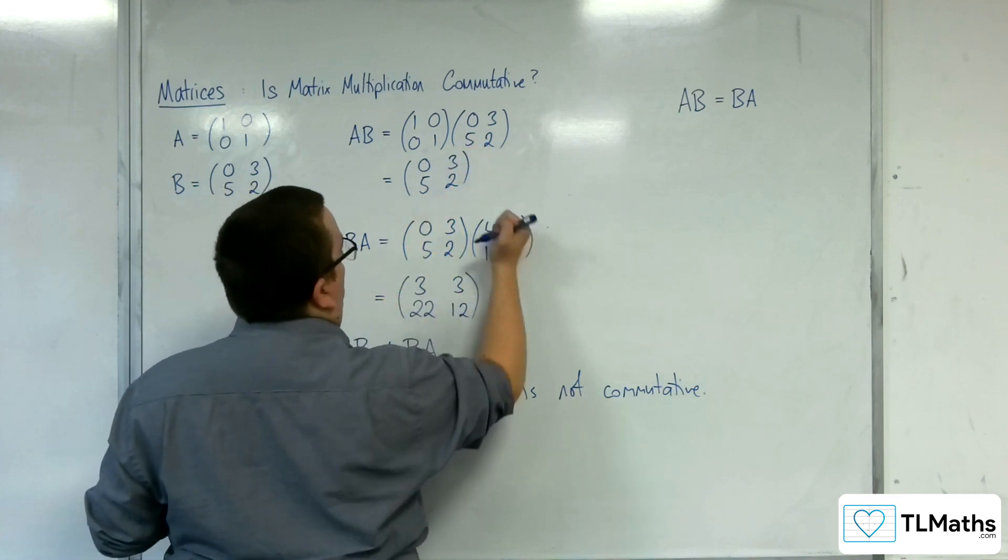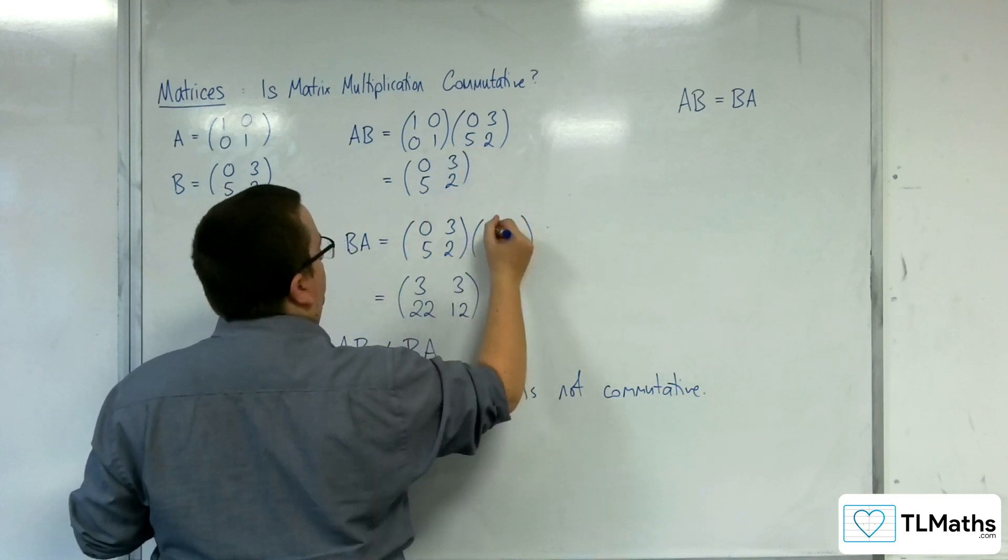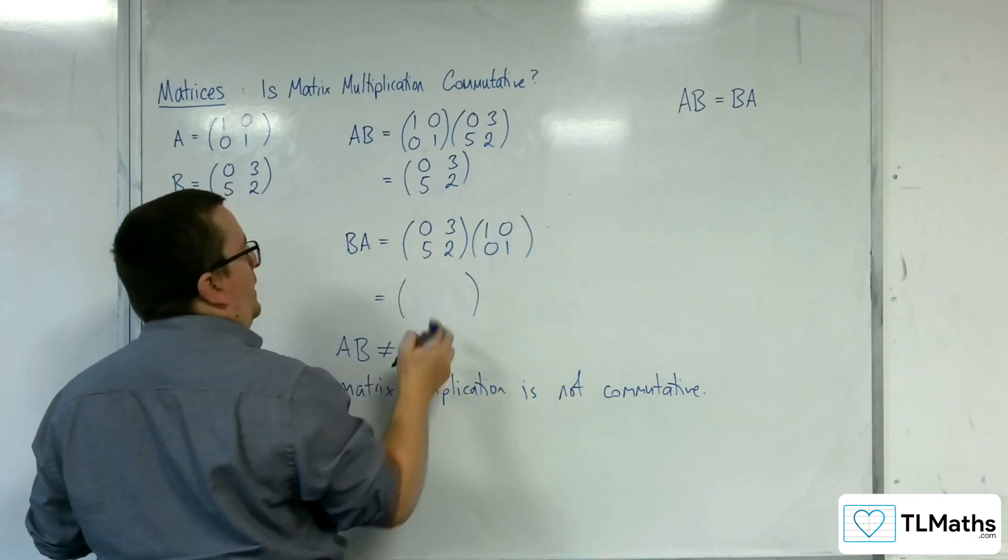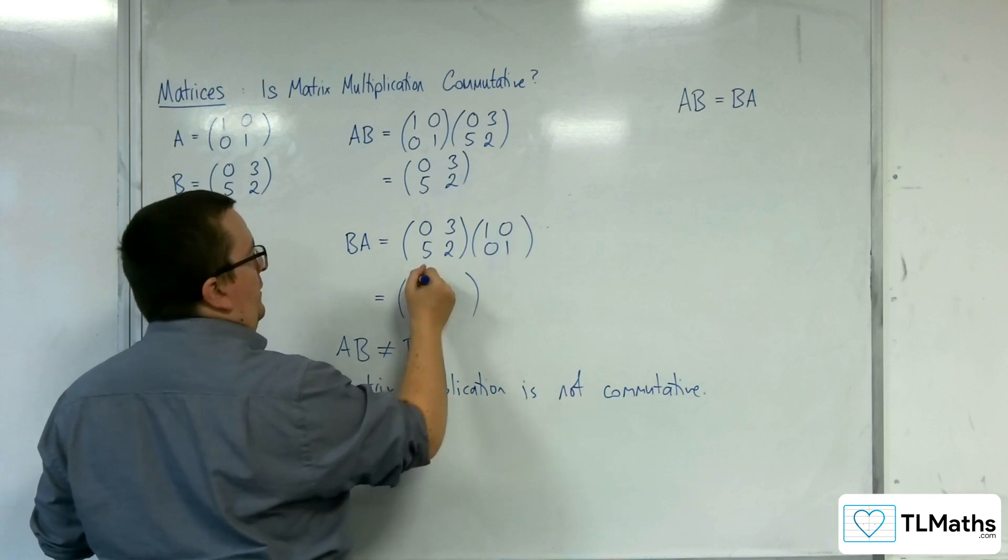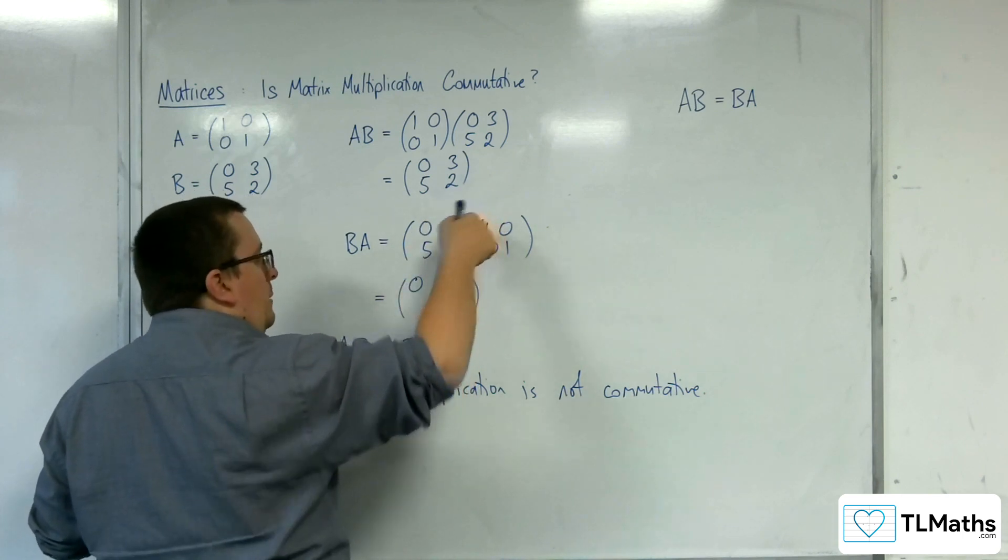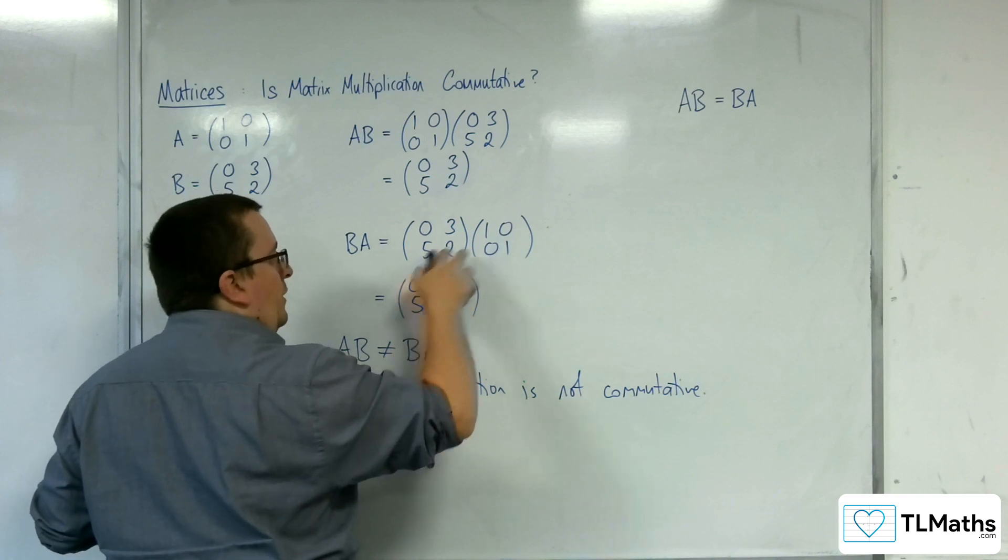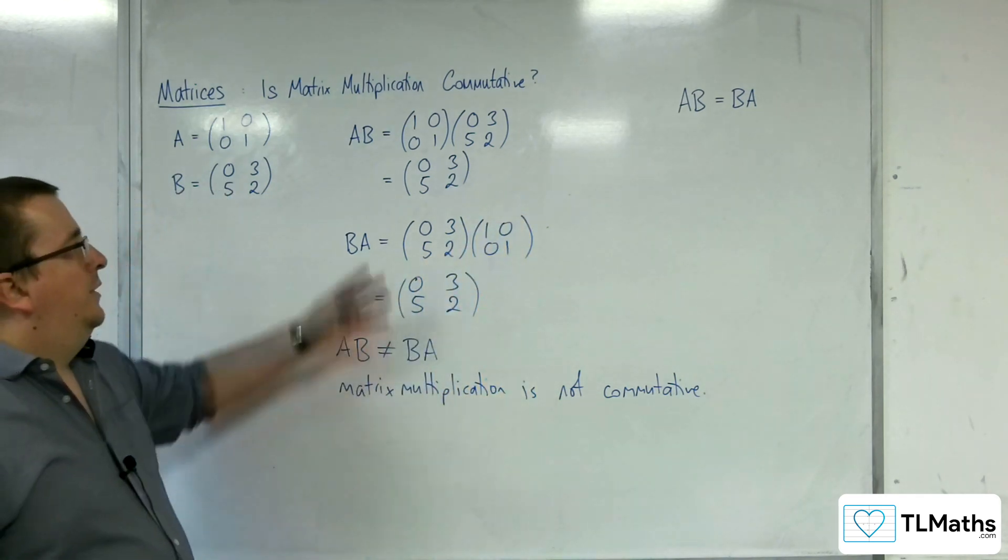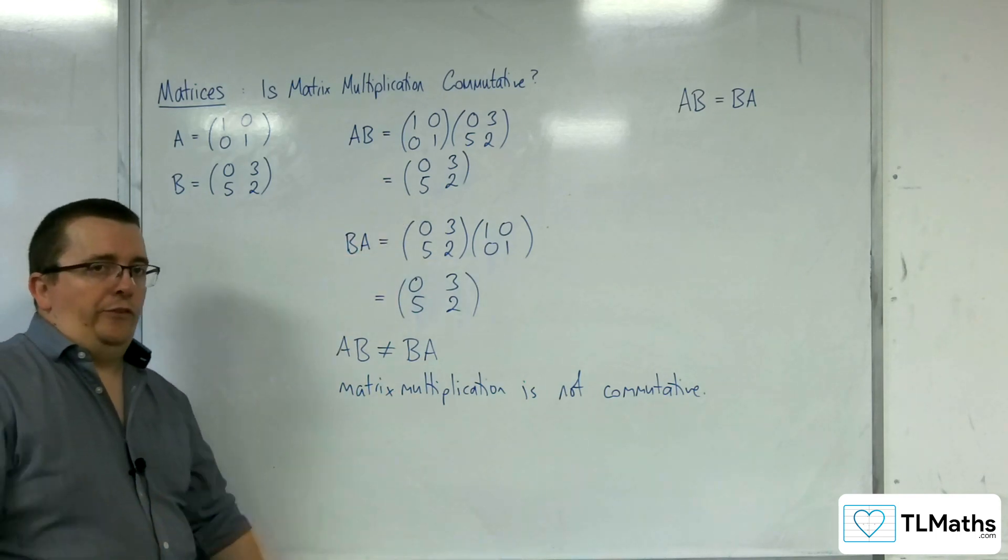If we do that the other way around, then unsurprisingly, 0,3 times 1,0 is 0. 0,3 times 0,1 is 3. 5,2 times 1,0 is 5. 5,2 times 0,1 is 2. And so in this case, you get the same result.